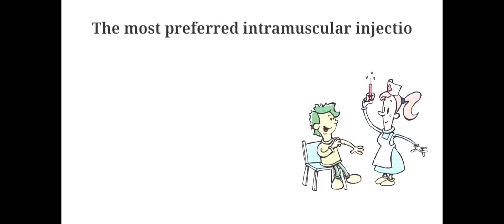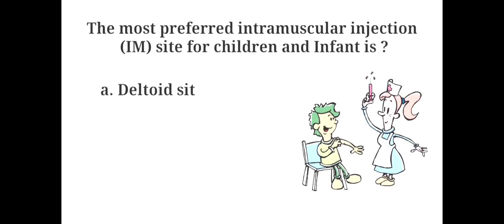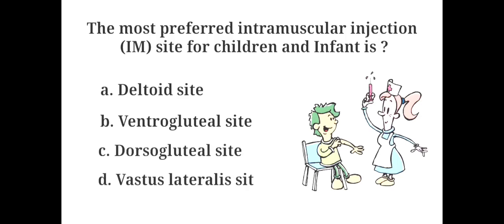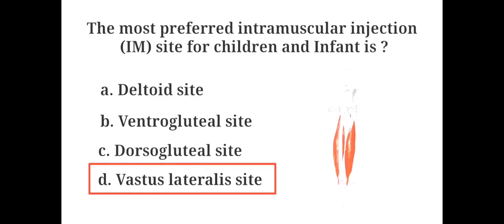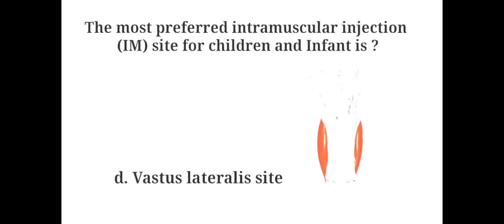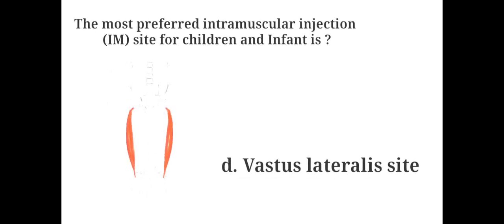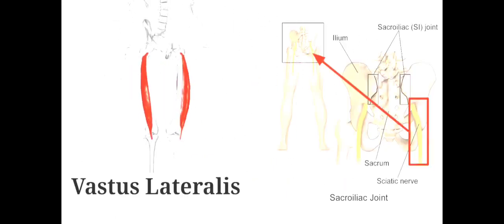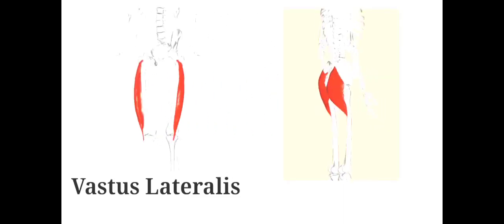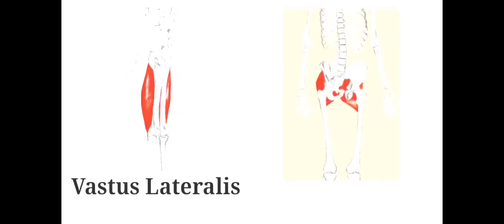The most preferred intramuscular injection site for children and infants is: A. Deltoid site, B. Ventrogluteal site, C. Dorsogluteal site, D. Vastus lateralis site. The answer is D. Vastus lateralis site. Never give an IM injection in the buttocks for an infant. Using the vastus lateralis muscle avoids the risk of sciatic nerve damage from the gluteal region, and has a larger muscle mass with reduced risk of severe local reactions.